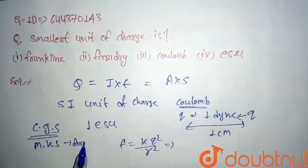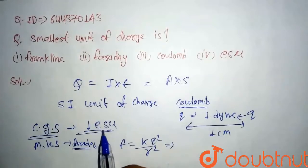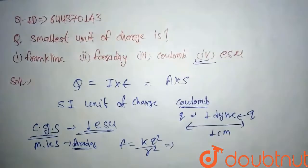So our smallest unit will be in CGS ESU, so our option will be the fourth option. Thank you.